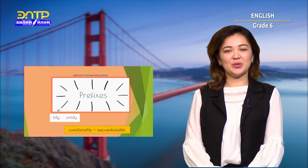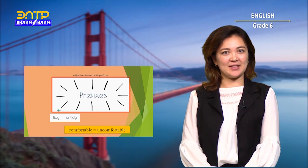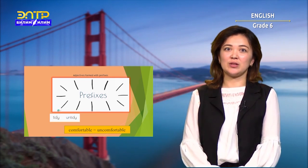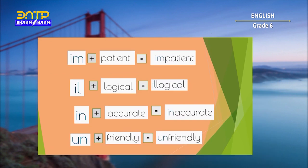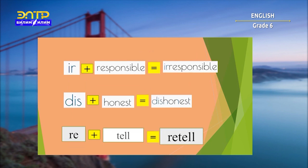Adjectives are also formed from prefixes. A prefix is placed at the beginning of a word to change its meaning. This slide shows examples: patience → impatient; accurate → inaccurate; logical → illogical; friendly → unfriendly; responsible → irresponsible; honest → dishonest.